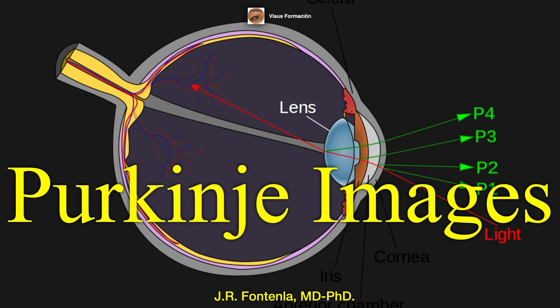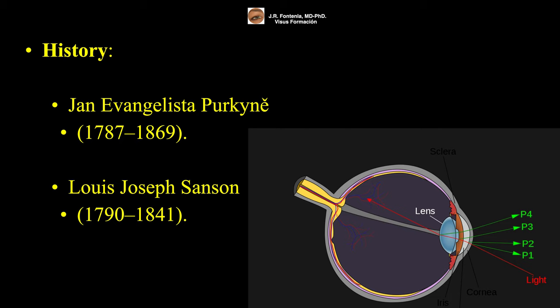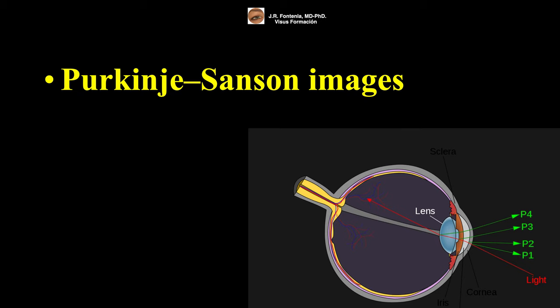The Purkinje images are named after the Czech anatomist Jan Evangelista Purkynĕ. A few years later, they were also studied by the French physician Louis Joseph Sanson. Therefore, they are also called Purkinje-Sanson images.